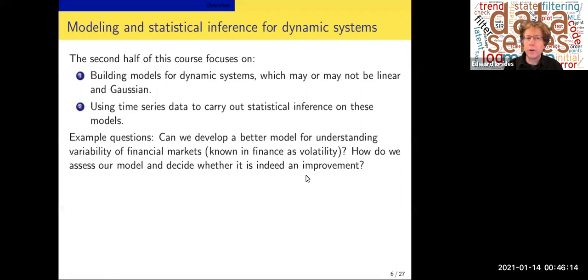The second half of this course focuses on modeling and statistical inference for dynamic systems. We want to build models for dynamic systems, and the models may be linear and Gaussian, or they may be non-linear, non-Gaussian. And then we want to use time series data to carry out statistical inference on these models. And we'll look at various questions in finance, economics, epidemiology, ecology. But one example question is, can we develop a better model for understanding variability of financial markets, which is known in finance as volatility? And if we build a model that we think is promising, how do we assess our model and decide whether it is indeed an improvement?